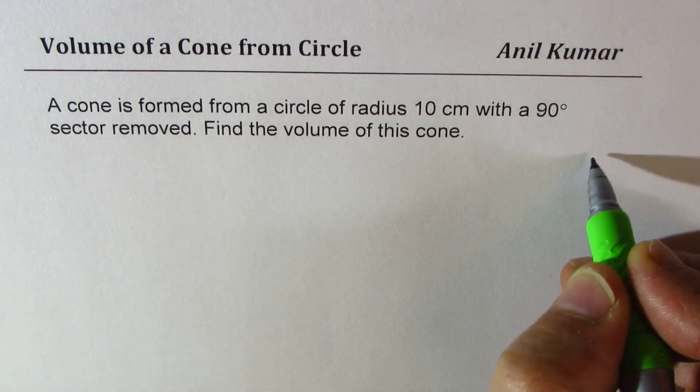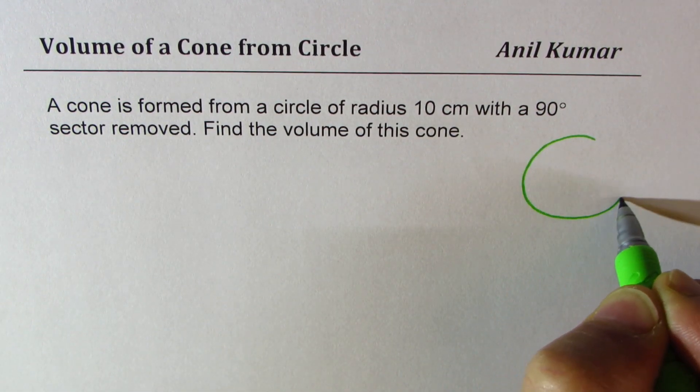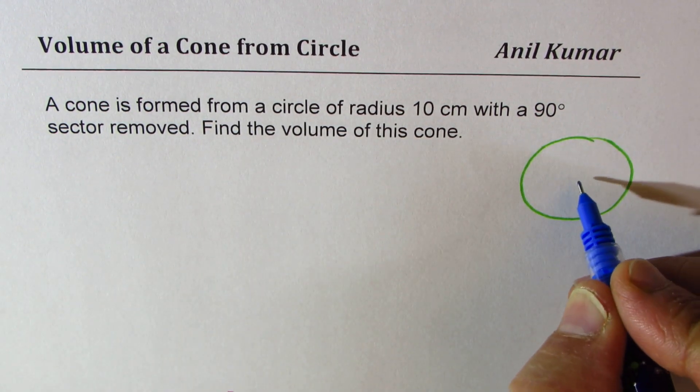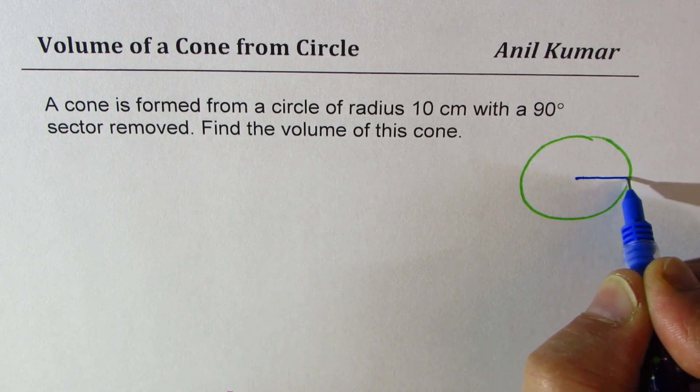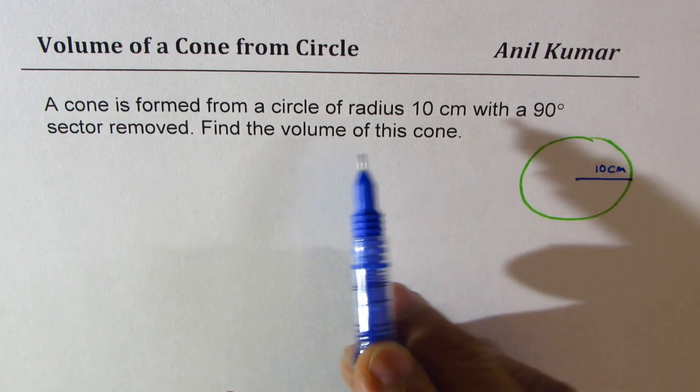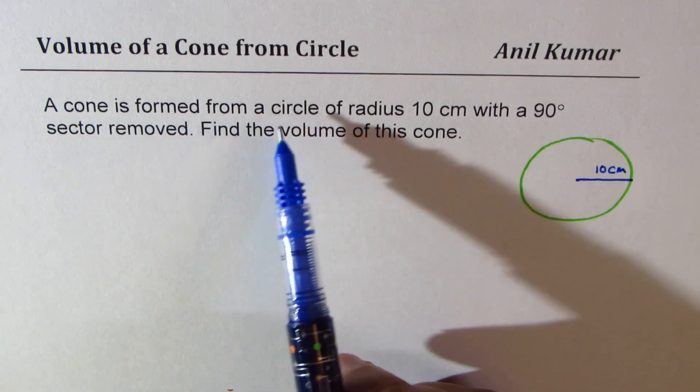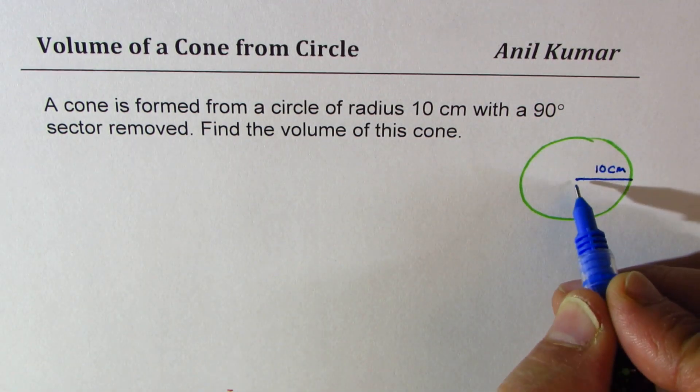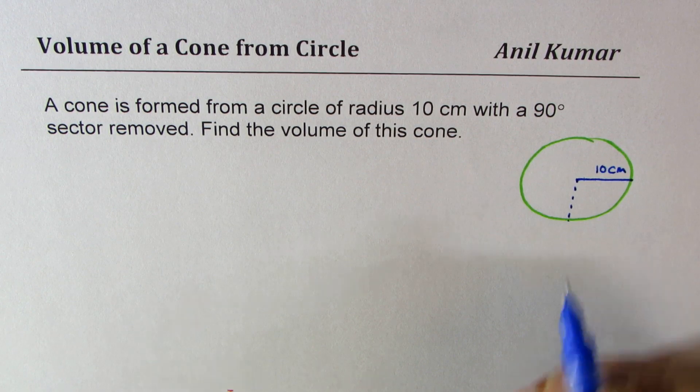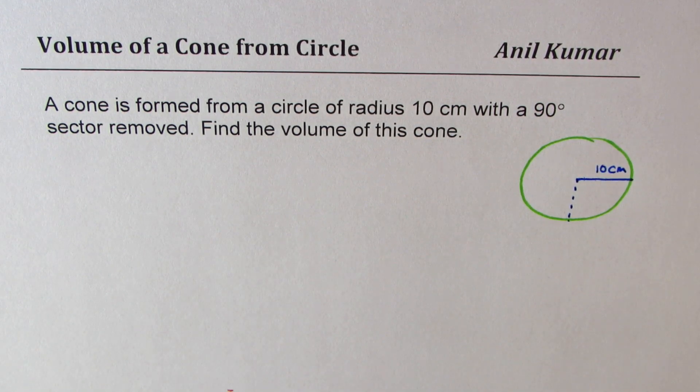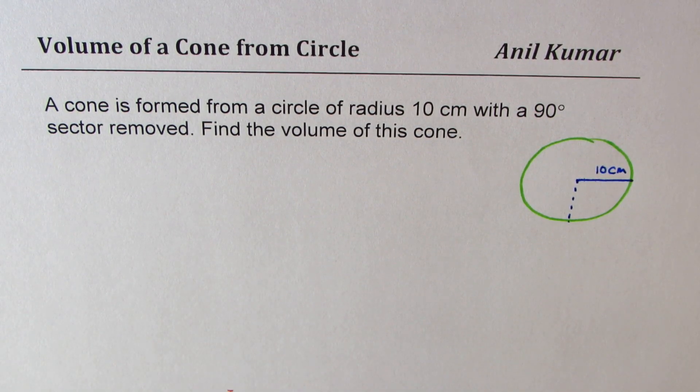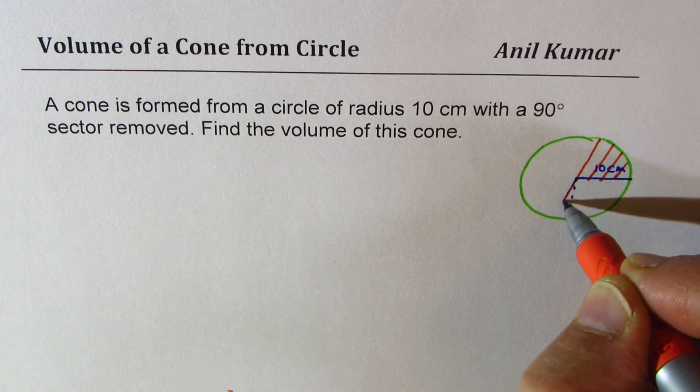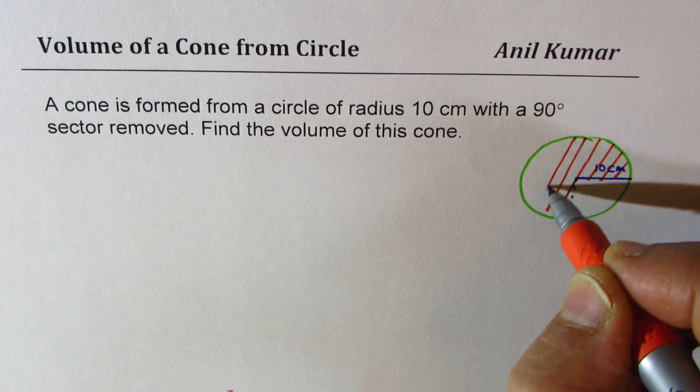Let's try to understand the question. We have a circle here whose radius is 10 centimeters. Now what we are saying is that a cone is formed from a circle with radius 10 centimeter with 90 degrees sector removed. That means we are removing that much of sector. So if I remove that much of sector and fold the rest, then this is what we get as the surface area. This is the surface area of our cone.